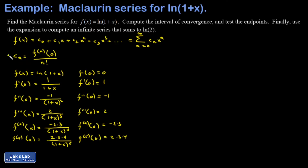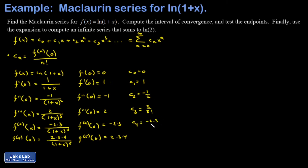Then we plug into our formula for the c's. So c0 is 0. c1 is 1 over 1 factorial, which is just 1. c2 is negative 1 over 2 factorial, or negative 1 half. c3 is 2 over 3 factorial. c4 is negative 2 times 3 over 4 factorial. And c5 is 2 times 3 times 4 over 5 factorial. I notice an interesting pattern: 5 factorial is 5 times 4 times 3 times 2, and the 4, 3, and 2 cancel out, leaving me with just 1 fifth.